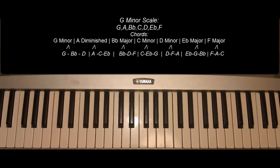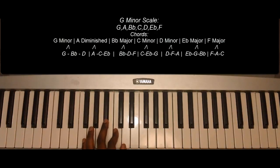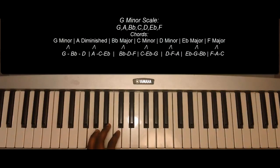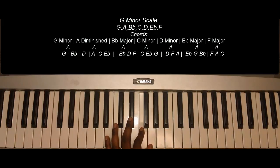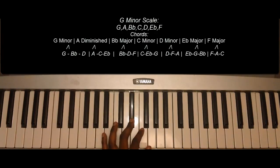G minor scale. The notes are as follows: G, A, Bb, C, D, Eb, F, G.